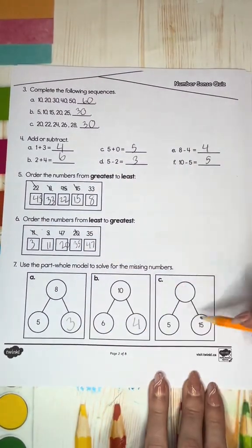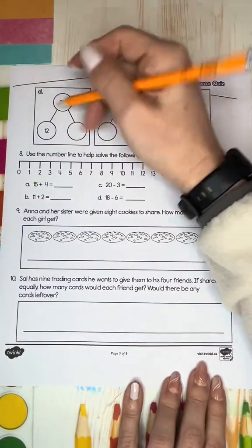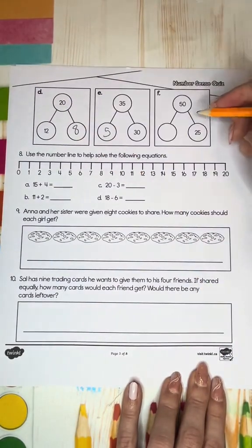Students in grade one also learned the part whole model. This lets learners see how a whole can be broken down into different parts and how those parts combine to become the whole.